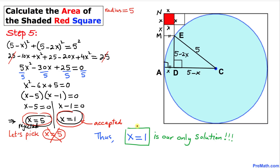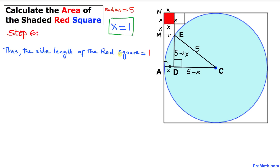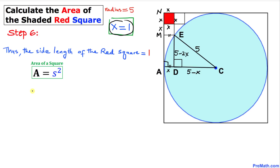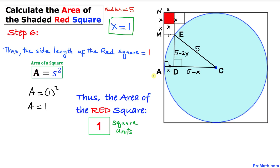Therefore x = 1 is our only valid solution. The side length of the red square is 1. Using the area formula, Area = s², with s = 1, the area equals 1² = 1. So the area of the red square is 1 square unit, and that's our final answer.